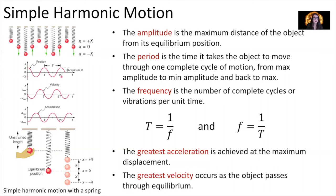The period is the time it takes the object to move through one complete cycle — from maximum amplitude through minimum amplitude and back to maximum amplitude again. The frequency is the number of complete cycles per unit time, or vibrations per unit time. The period is equal to one over the frequency, and the frequency is equal to one over the period of oscillation.